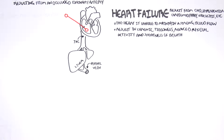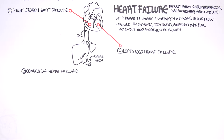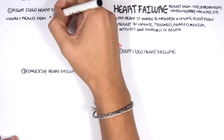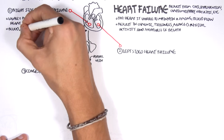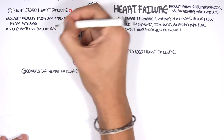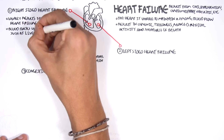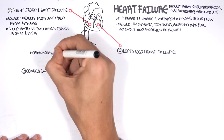Heart failure can be divided into three types: right-sided heart failure, left-sided heart failure, and congestive heart failure. Right-sided heart failure is usually a result of left-sided heart failure. In right-sided heart failure, involving the right atrium and right ventricle, blood can back up into other tissues such as the liver and the abdomen, causing congestion in these areas.